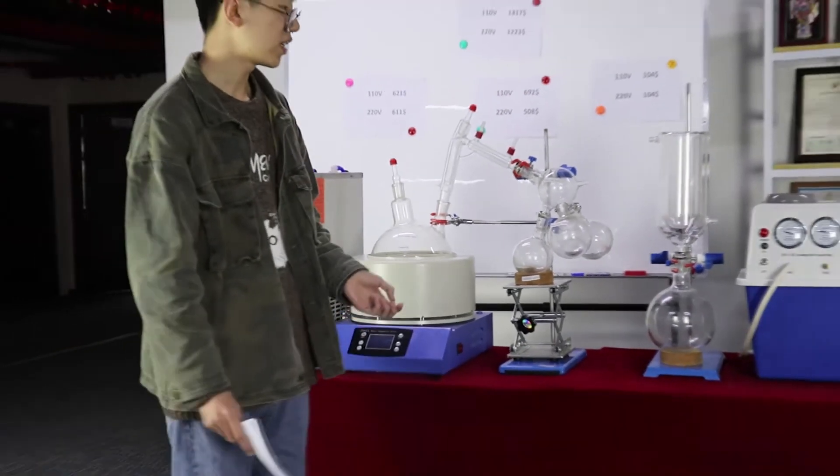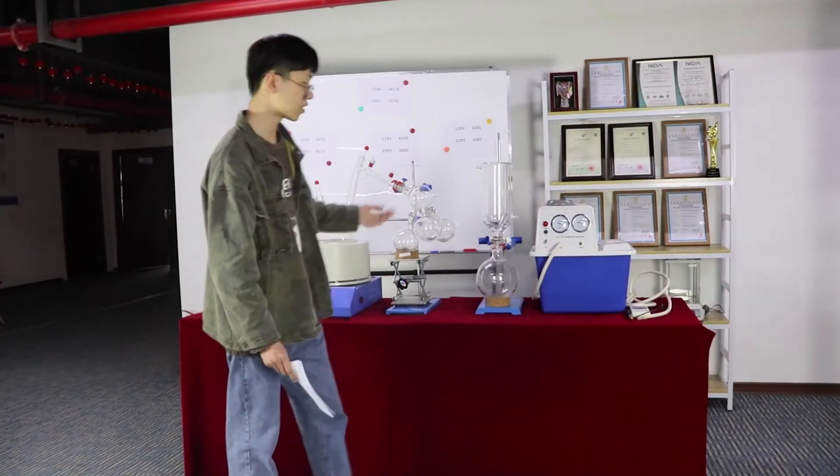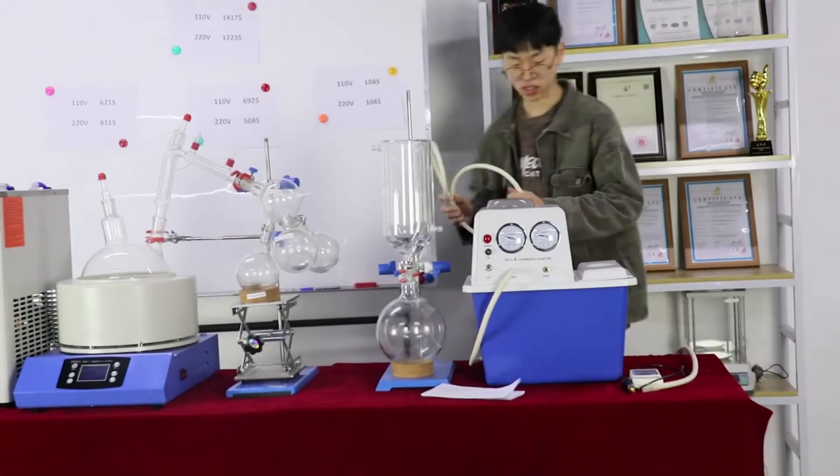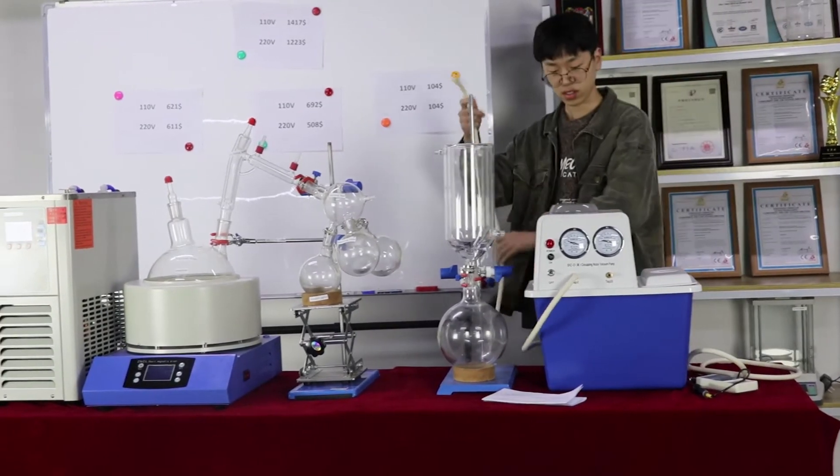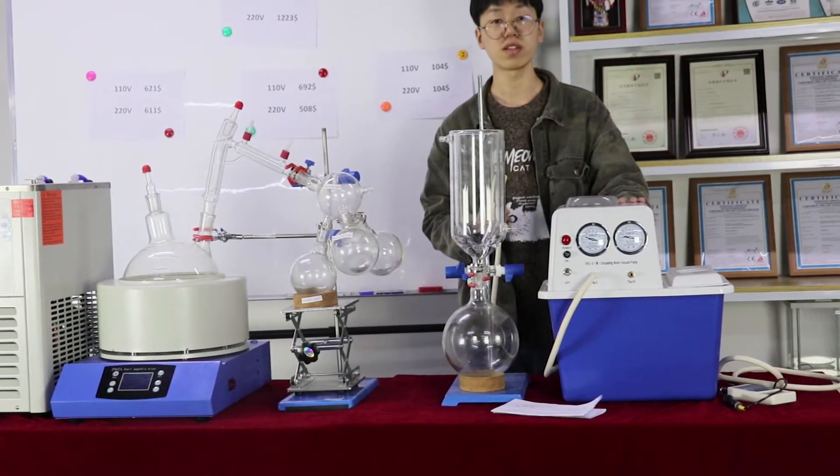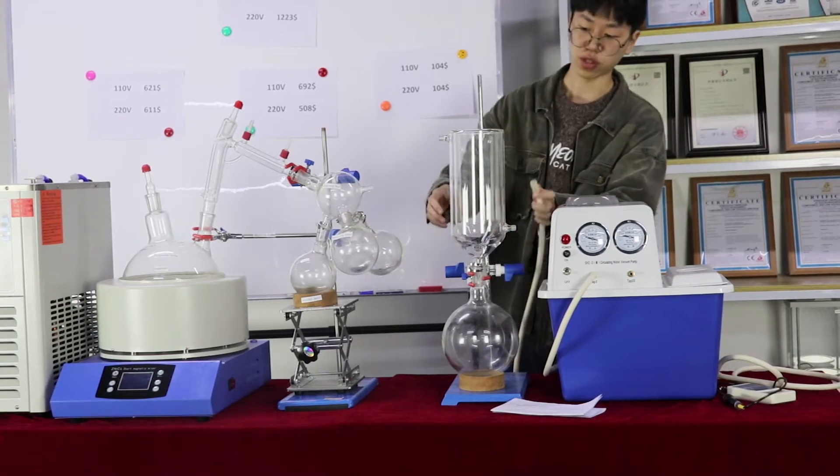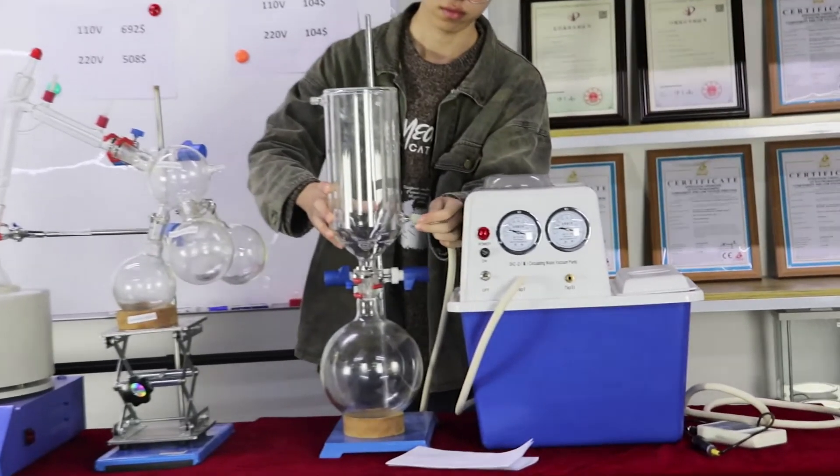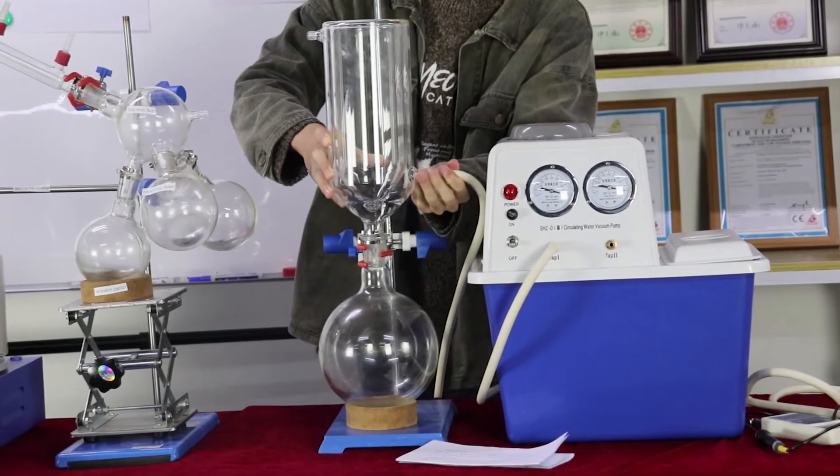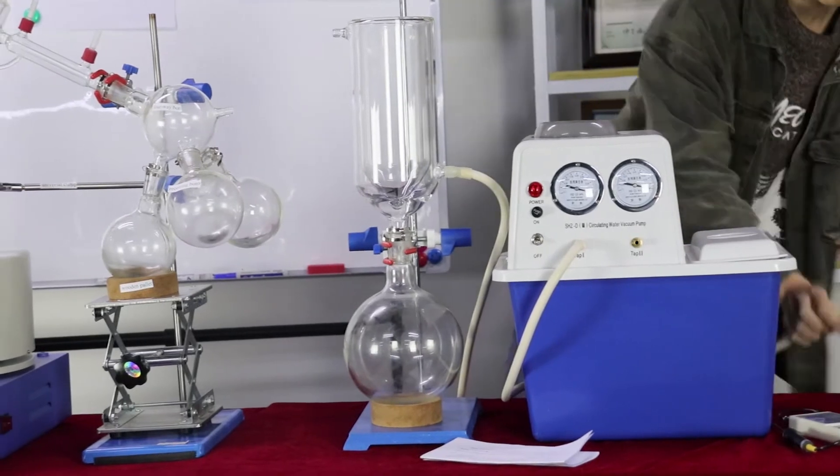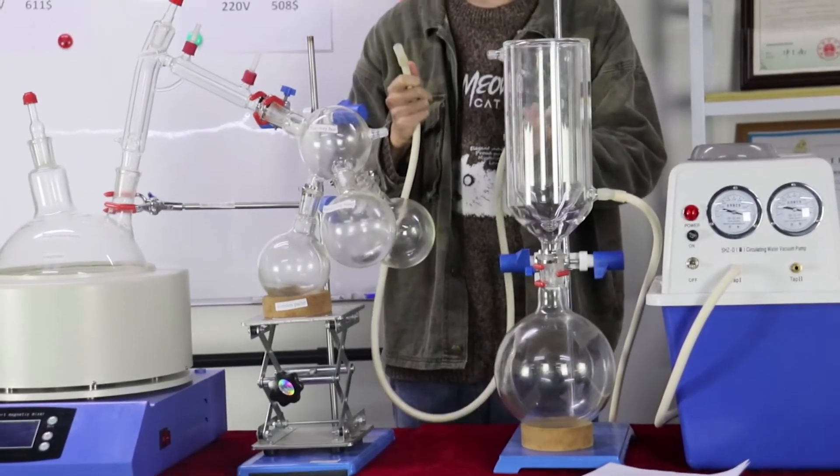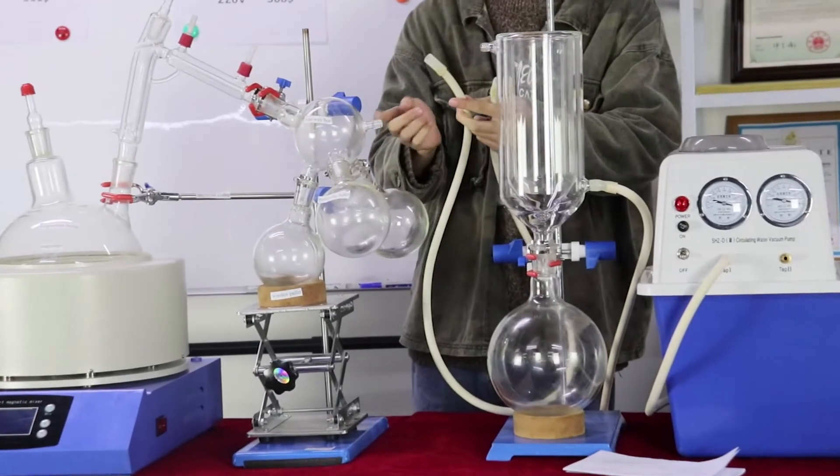Okay, I will connect the system. This is the vacuum tube. First, I need to connect the circulating water vacuum pump to the cold trap. It needs to lock out. Second, I need to connect the cold trap to the 4-way bottle.